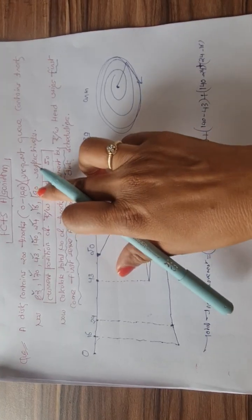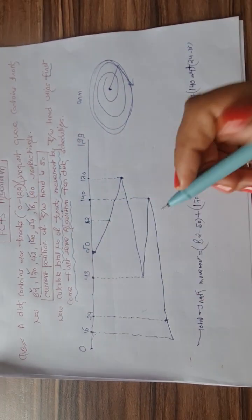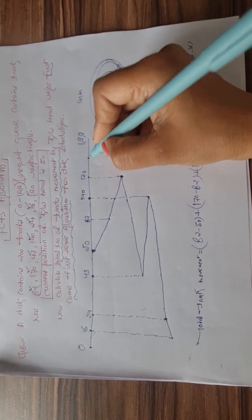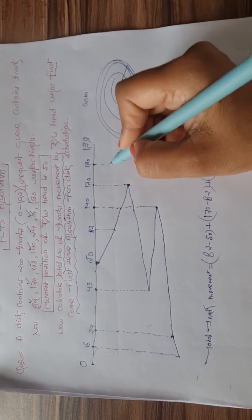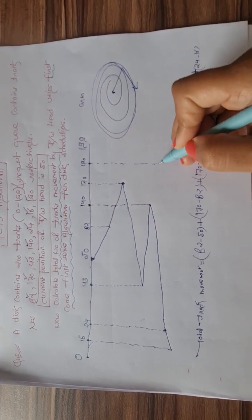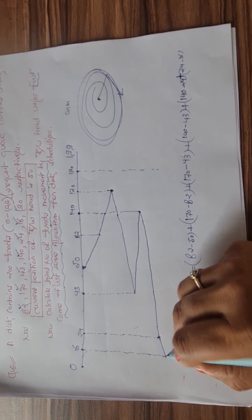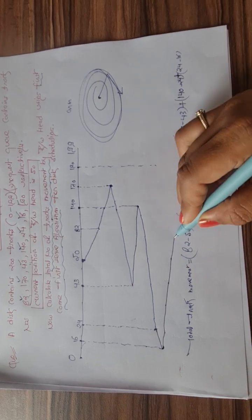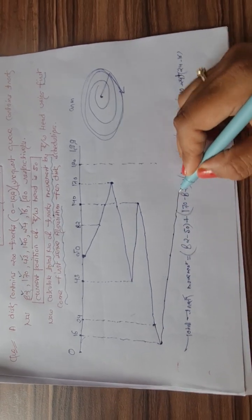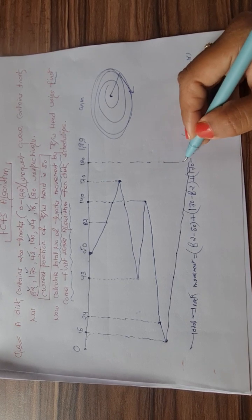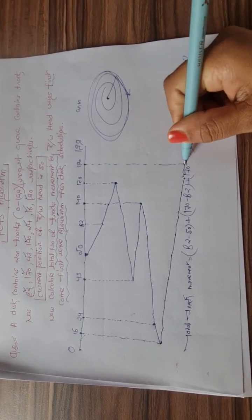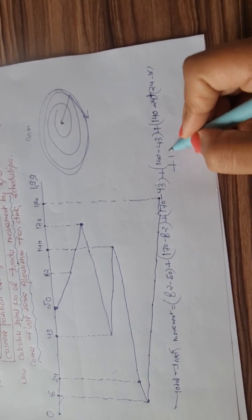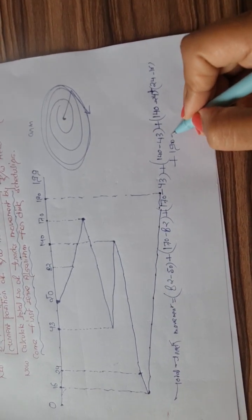The last track in the queue is 190. Since 190 is in the opposite (forward) direction from 16, the read/write head moves all the way forward to 190. This final track movement equals 190 minus 16.